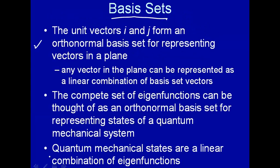The quantum mechanical states are linear combinations of eigenfunctions. And if these eigenfunctions are orthonormal, we can represent any quantum state as a linear combination of them.